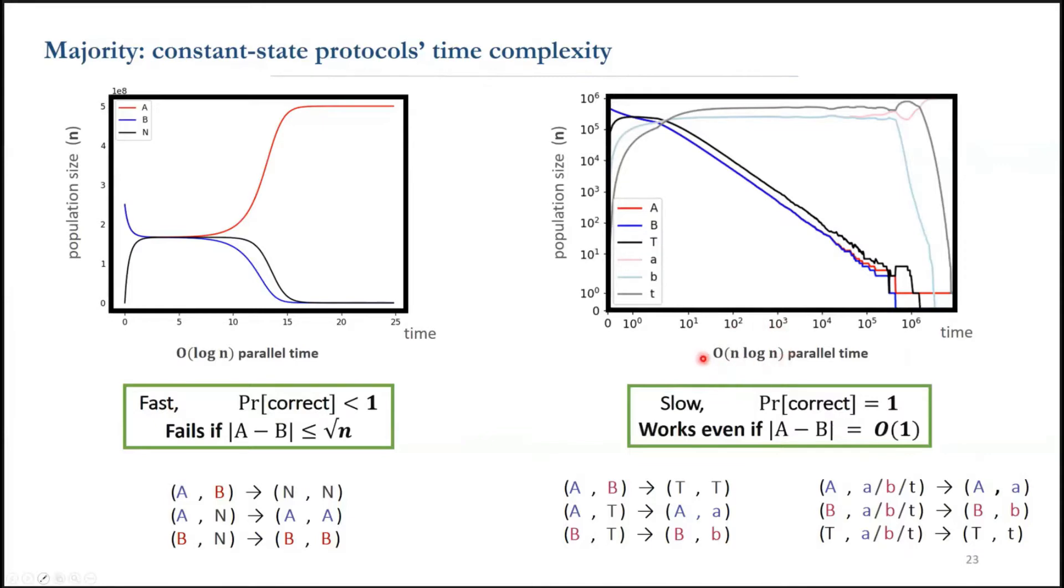Its probability of correctness is one, and it works, even if the gap between a and b is constant, or even if it's zero.